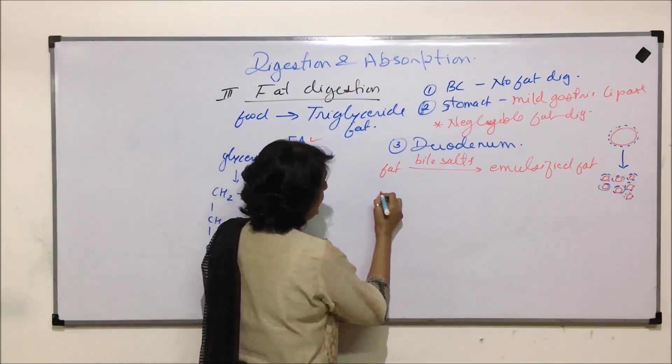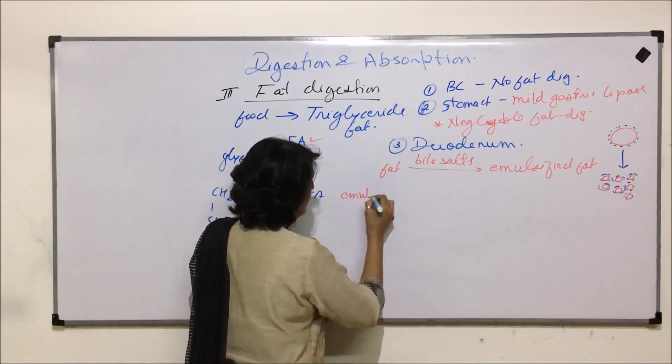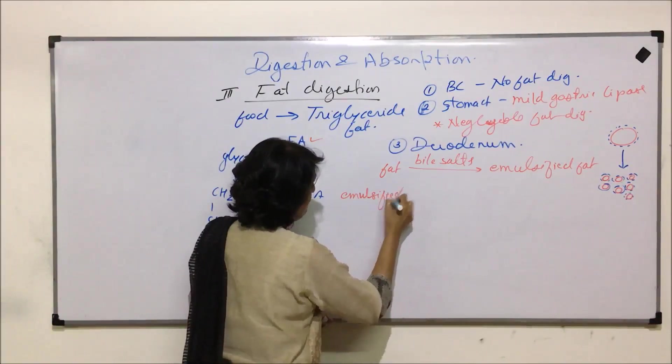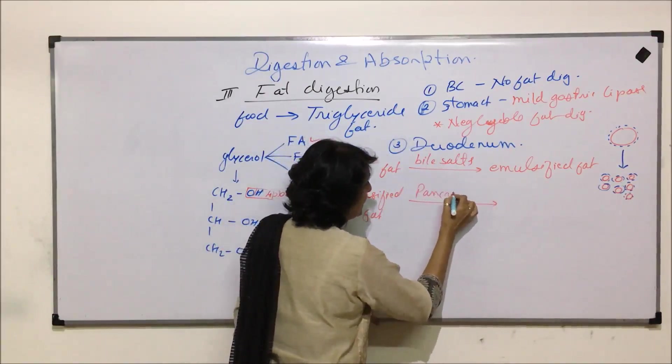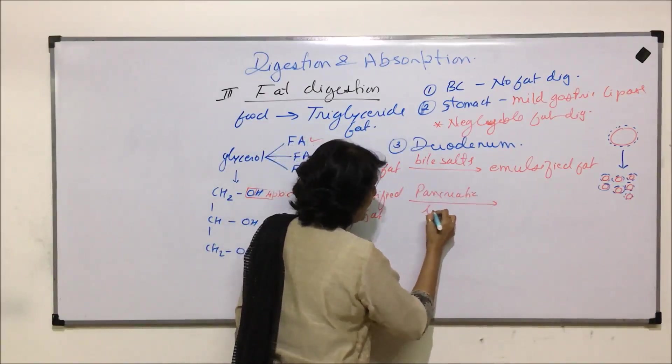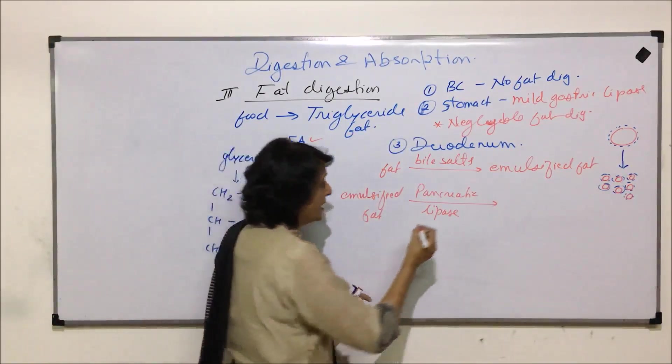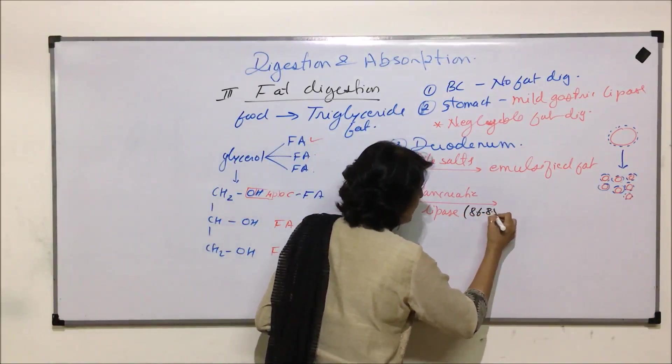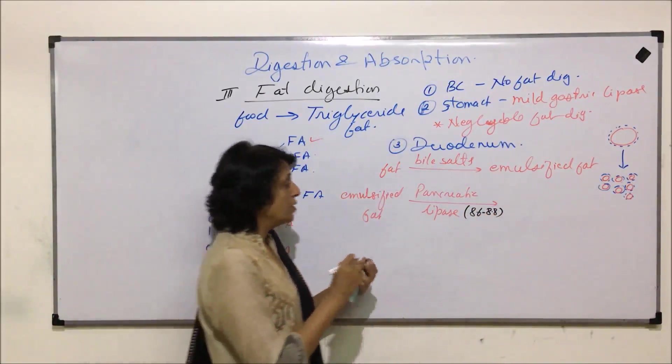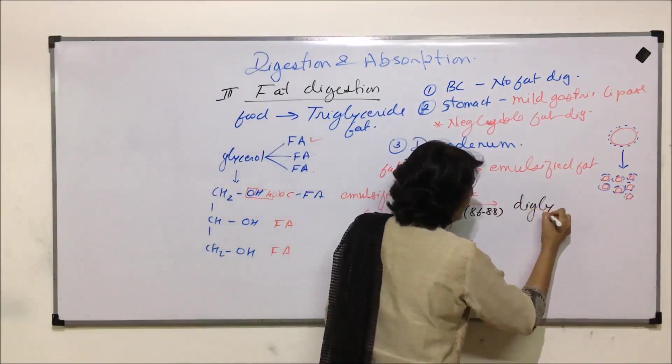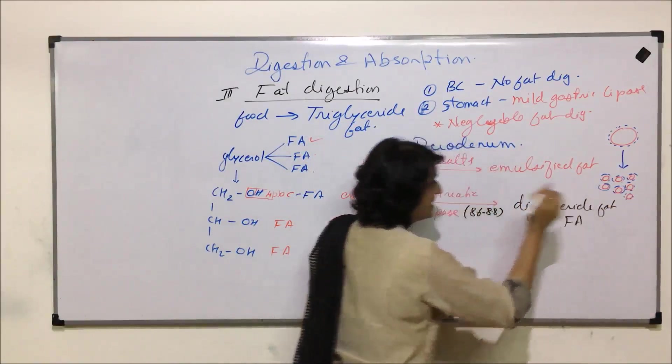Now this emulsified fat is acted upon by pancreatic lipase. Action is again taking place at the basic pH 8.6 to 8.8, and it is broken down into diglyceride fat plus fatty acids.